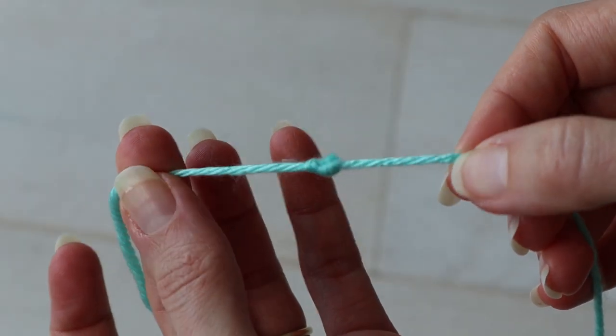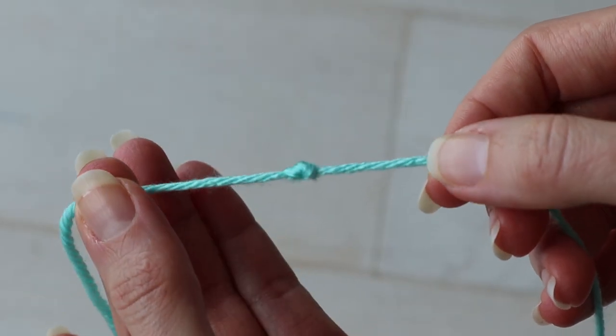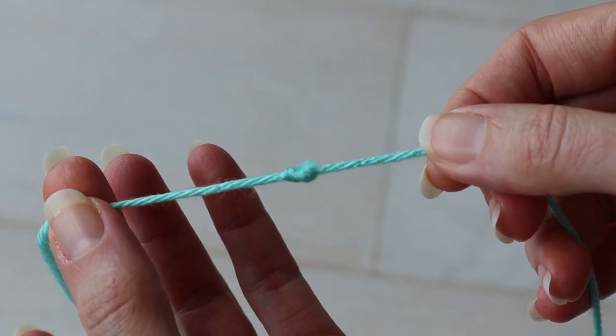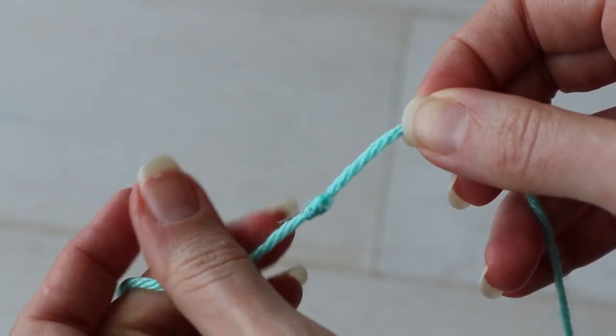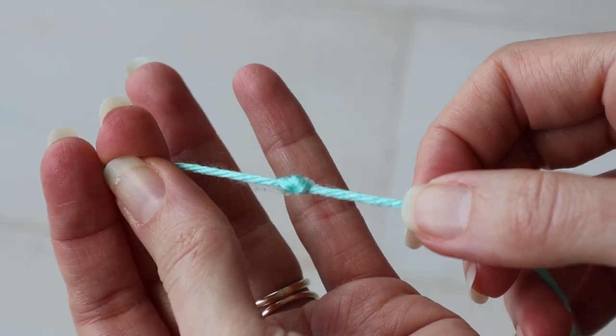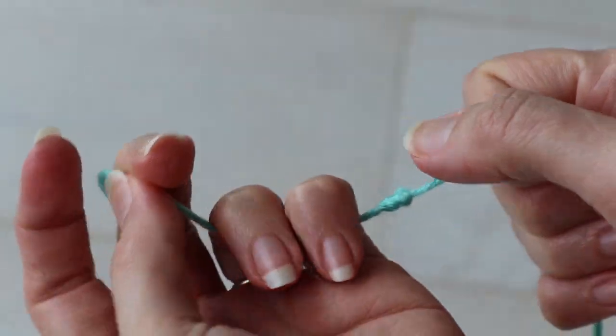Today I'm going to show you how I joined these two yarns without having any ends to weave in, and I didn't even have any ends to trim. That's right, I did not break out a pair of scissors to make this knot. That makes it a little bit different than the Russian join, but it gives a similar effect.